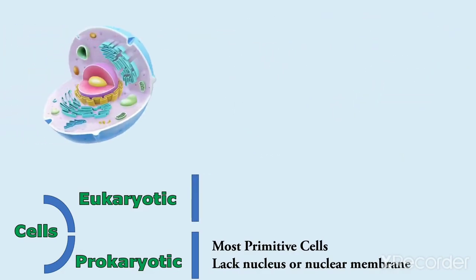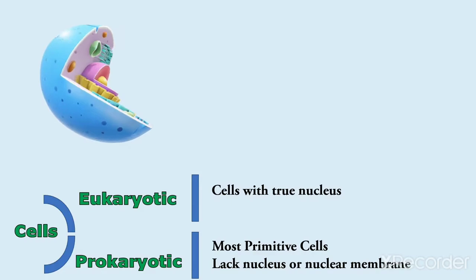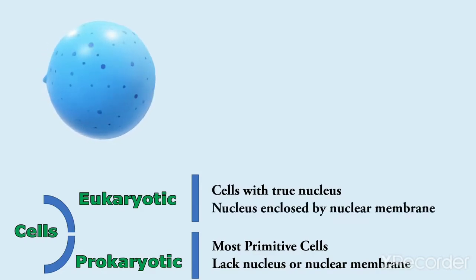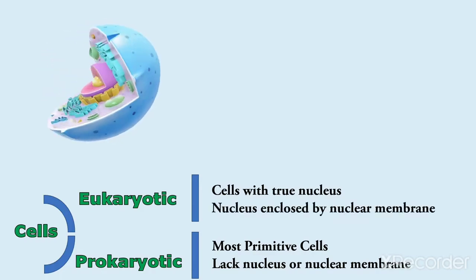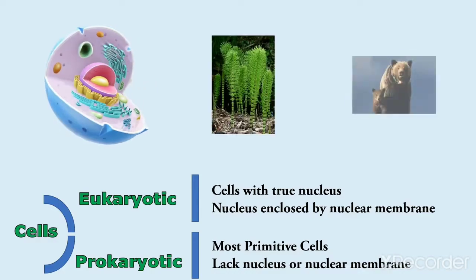Eukaryotic cell. These are the cells with true nucleus. Nucleus is always enclosed by nuclear membrane. Examples: plants and animals.